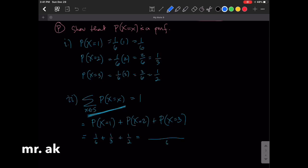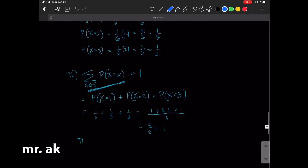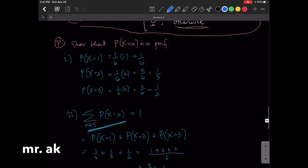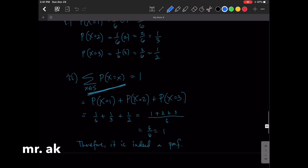And that is 1/2. Let's add all numbers. This is 1 plus 2 plus 3, which is 6, divided by 6, which is 1. The second condition holds, and so therefore, it is indeed a probability mass function. That's how you show that a probability distribution is a probability mass function. You show that the two conditions hold.